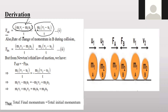Similarly, F_BA = (m2v2 − m2u2) / t, which simplifies to m2(v2 − u2) / t. We simply divide the change in momentum by time t. So we now have two equations: F_AB, the force acting on B, and F_BA, the force acting on A.